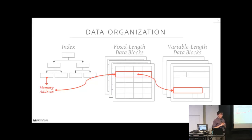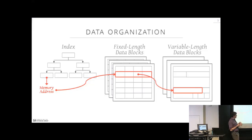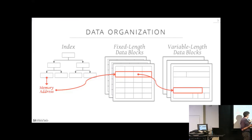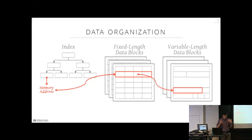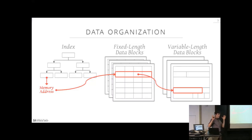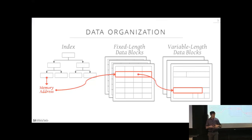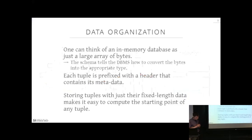This is the picture from the beginning of the course about how an in-memory database is organized. There's an index — B+ tree, BWTree, whatever — and the value portion of the tree has a pointer to some location of a tuple in a fixed-length tuple block. For any attribute larger than 64 bits, we store a pointer to a variable-length block where we store varchars, text fields, and similar things. Now let's go into more detail on how we organize the data within a tuple itself.